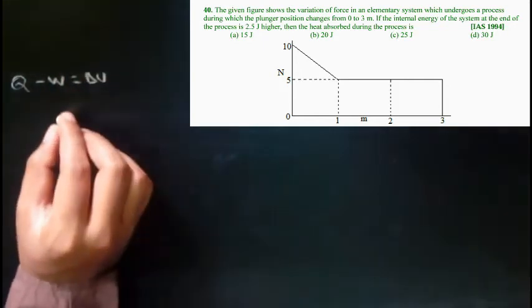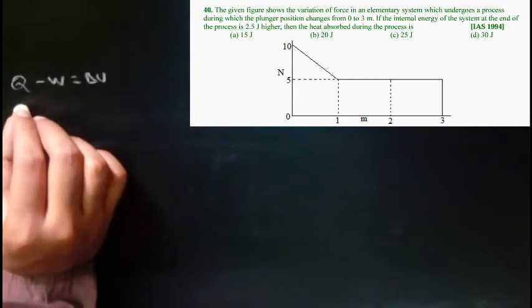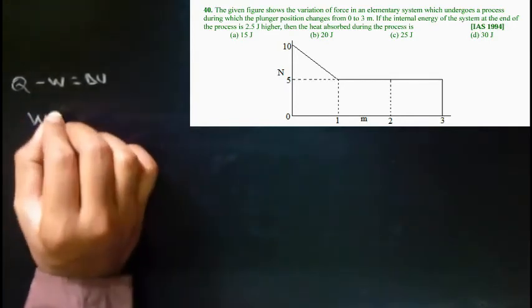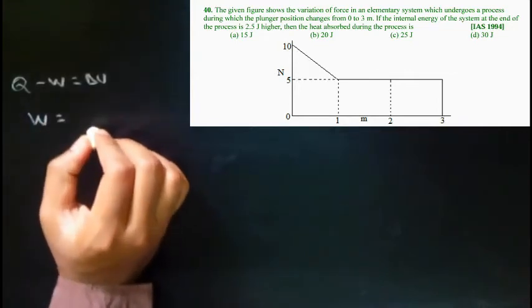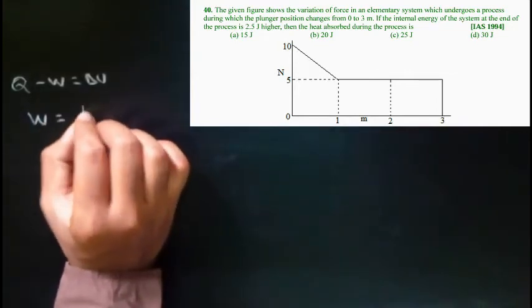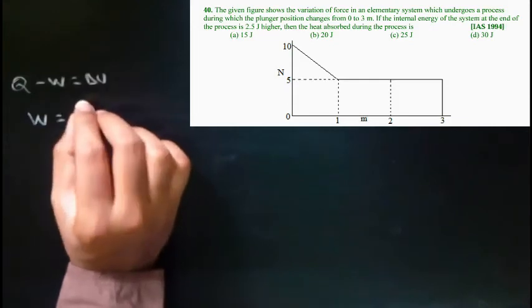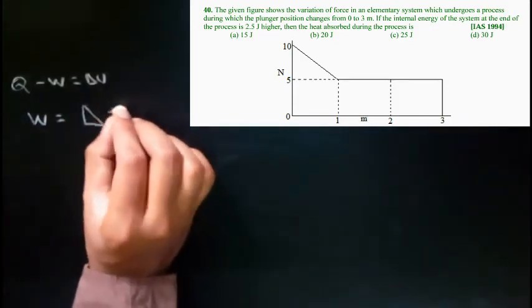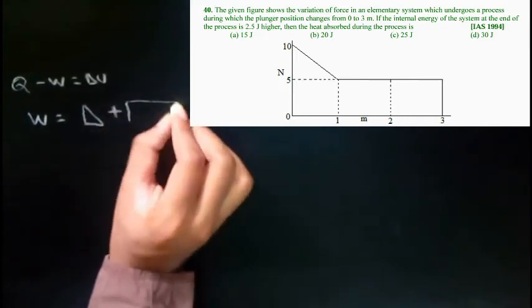So we can directly apply the first law of thermodynamics: Q minus W equals del U. We can find W with this graph by adding the area of the rectangle and the triangle.